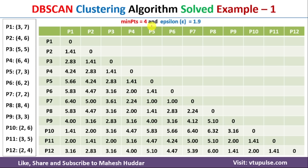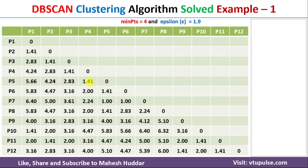The next step is to identify the nearest data points for each of the 12 data points. Starting with P1, we look horizontally then vertically for distances less than 1.9. P1 to P1 is 0, so P1 is part of itself. Looking at the P1 column, 1.41 is less than 1.9 for both P2 and P10. This means P2 and P10 are the nearest neighbors to P1.